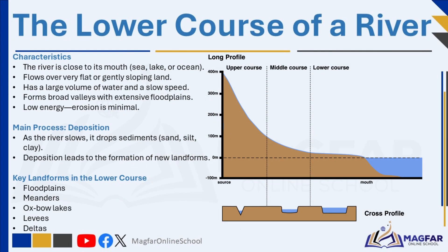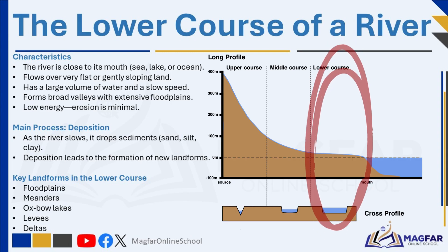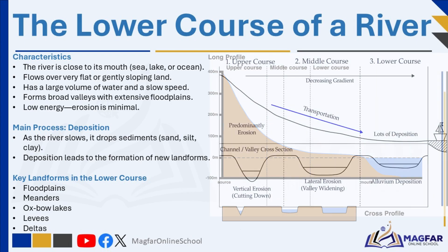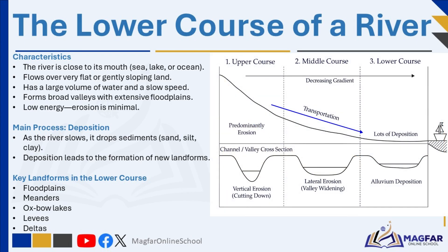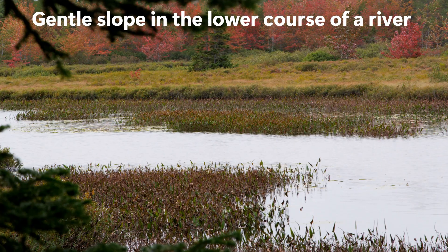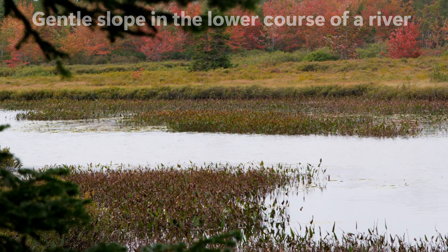In the lower course, the river is nearing its mouth where it will eventually empty into a sea, lake, or ocean. By this point it has collected a large volume of water and flows across very flat or gently sloping land. The valley shape is broad and flat, often forming extensive floodplains — wide flat areas that may flood during heavy rains. Because the gradient is very gentle, the river has low energy and moves much slower than in the upper or middle courses. The river performs less erosion and instead focuses on deposition, dropping sediments including sand, silt, and clay that gradually build up new landforms.